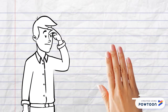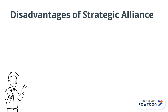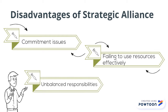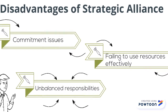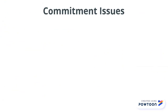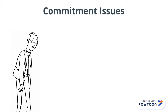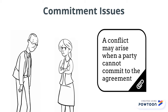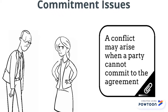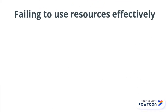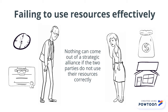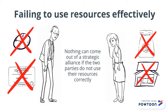Now, let's hop on to the disadvantages. The downsides of Strategic Alliances are commitment issues, failing to use resources effectively, and last but not least, unbalanced responsibilities. Commitment issues arise when one party stops putting effort into the collaboration, which may result in a conflict. Failing to use resources properly can result in the failure of the collaboration, and this wastes each party's time, resources, and effort. It might even cause a loss for the parties involved.